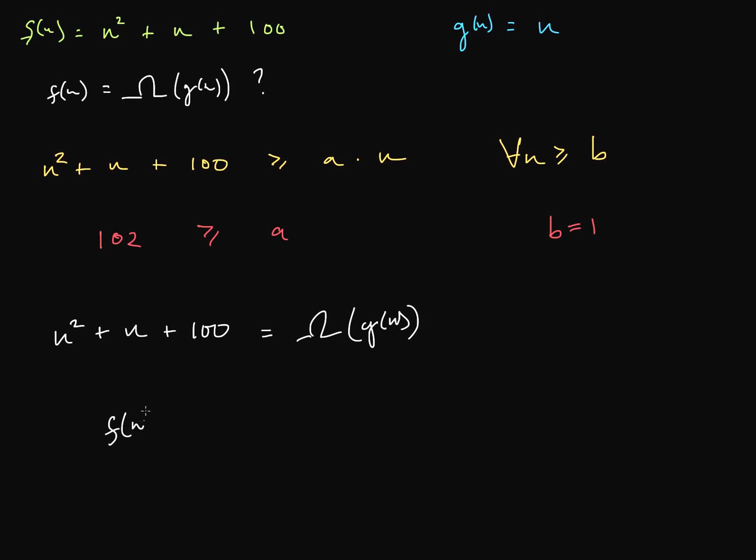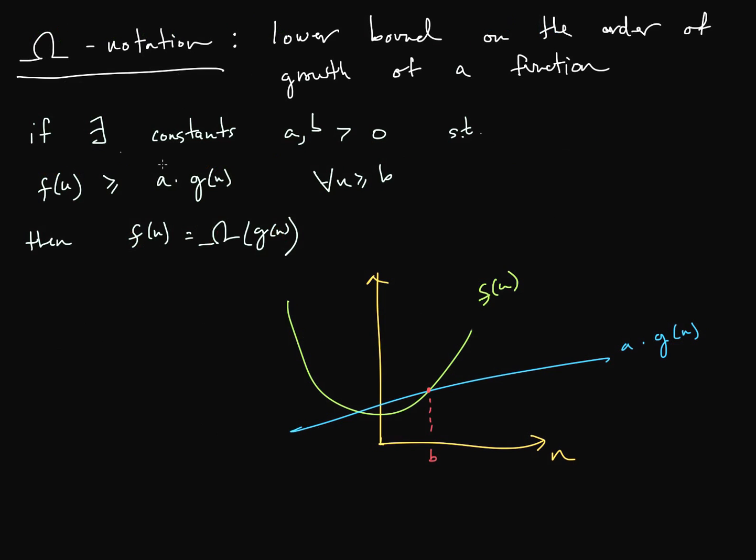I want to point out that we're starting to see that the highest order term is really what counts here. n squared clearly grows faster than n. You can see that f of n, it's more like a quadratic function, clearly grows much faster than a linear function.